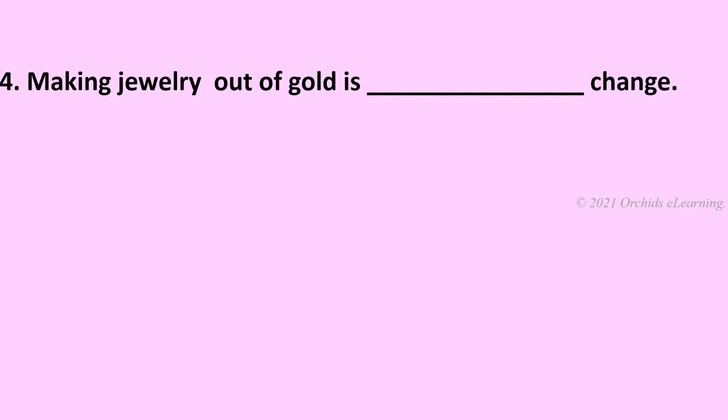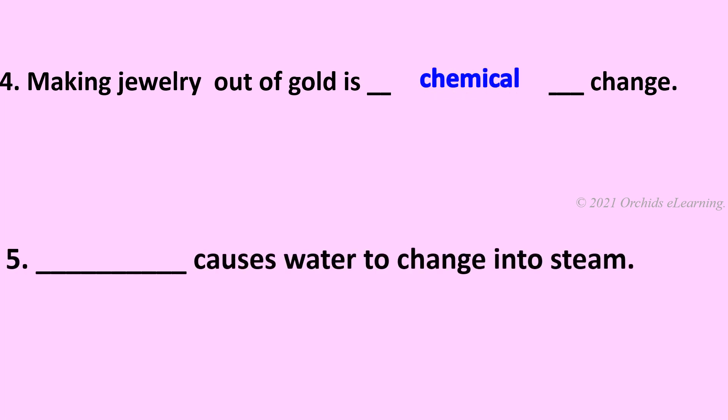Making jewelry out of gold is a blank change — chemical. Blank causes water to change into steam — heating. Choose the correct option.